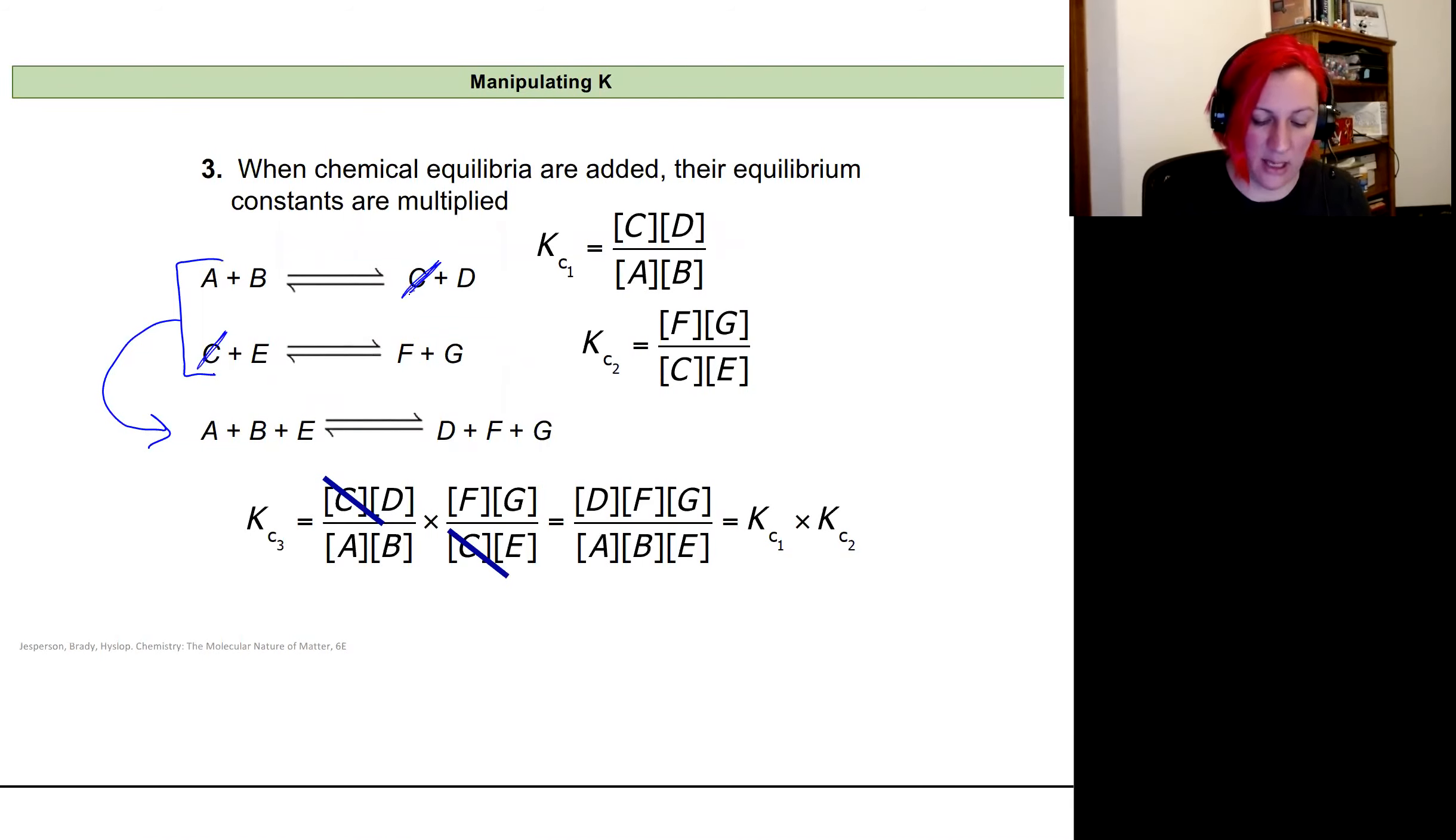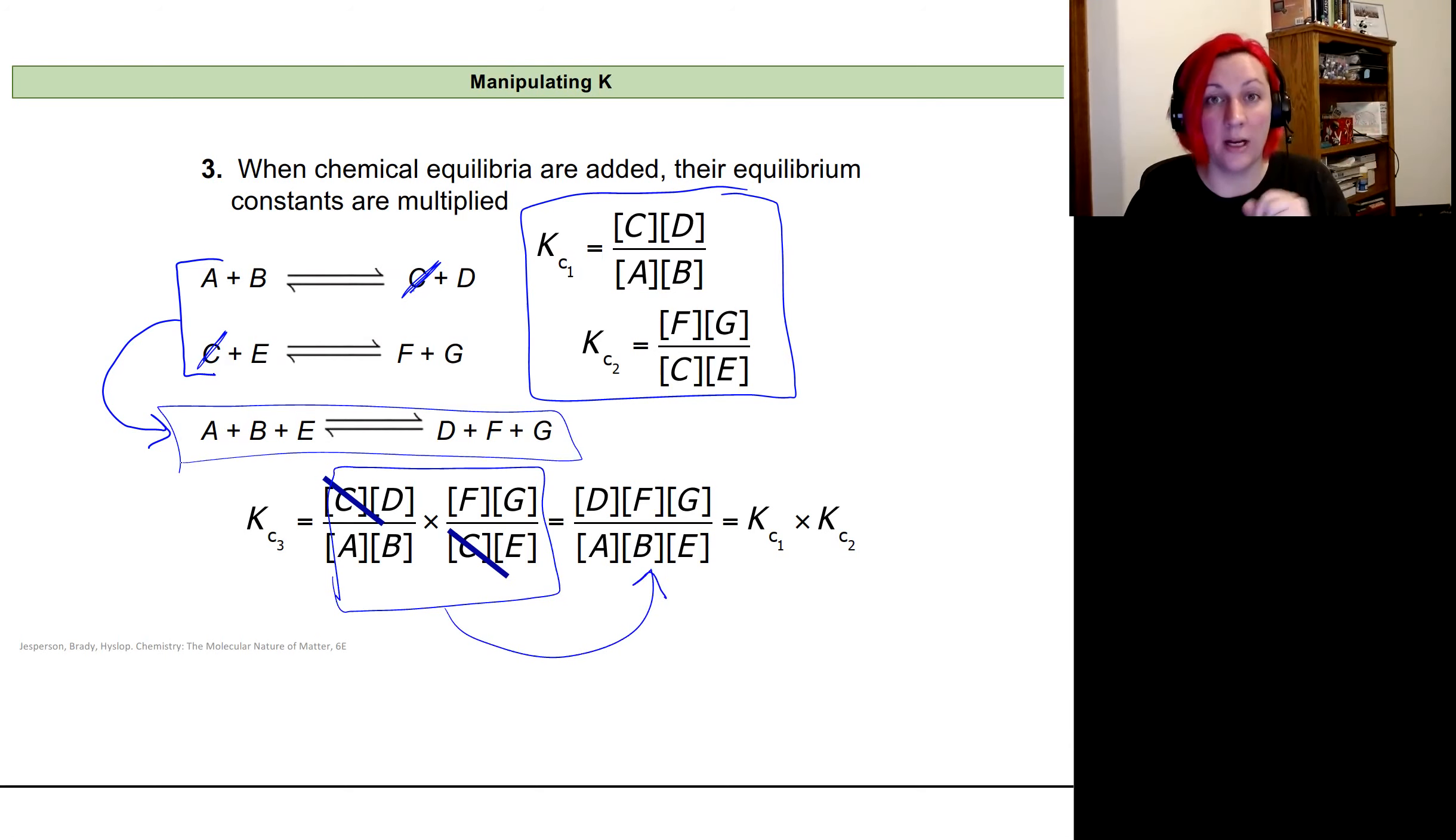So I can get rid of this C value here, and I'll have A plus B plus E forms D plus F plus G for my products. I can combine these two expressions right here, and that gets me exactly the same equilibrium constant as if I made it up for just the two reactions already combined. So my equilibrium constant for my new expression is just going to be multiplying the two reactions that I have equilibrium constants for to get my new reaction, which is a combination of the two.